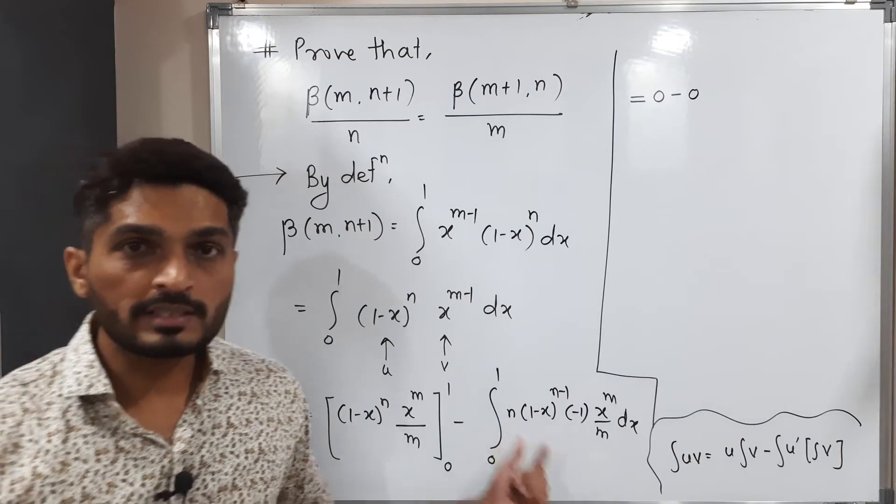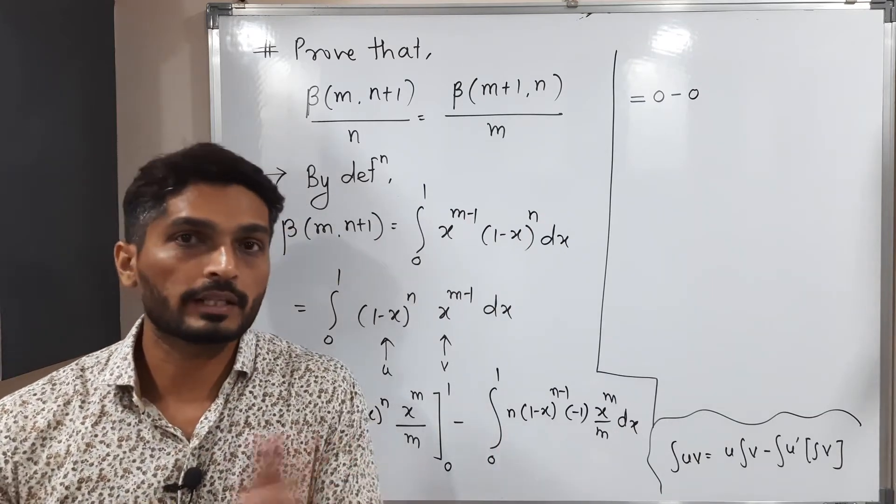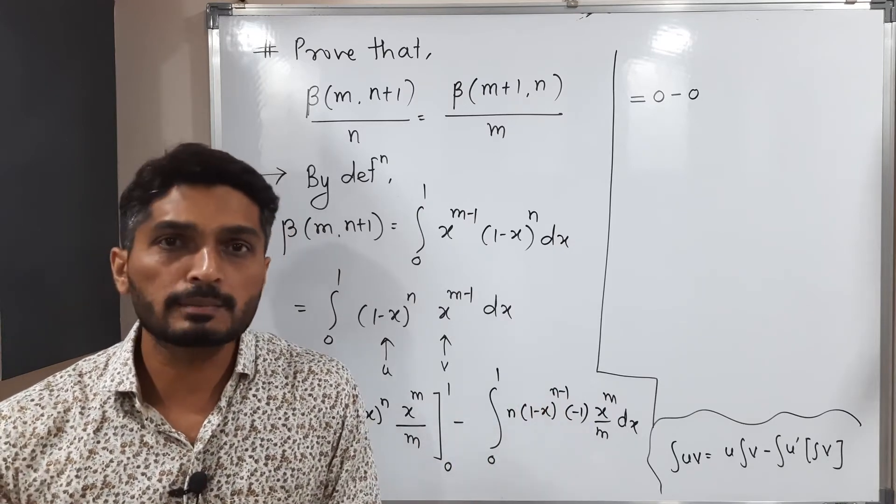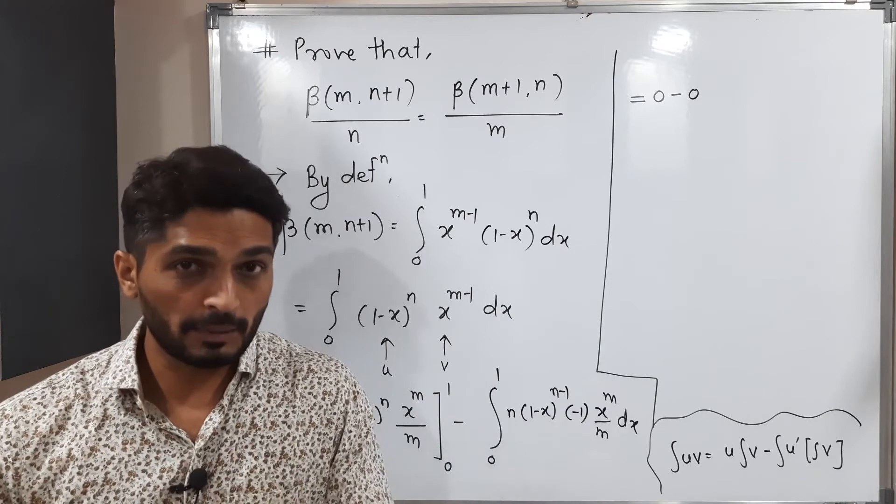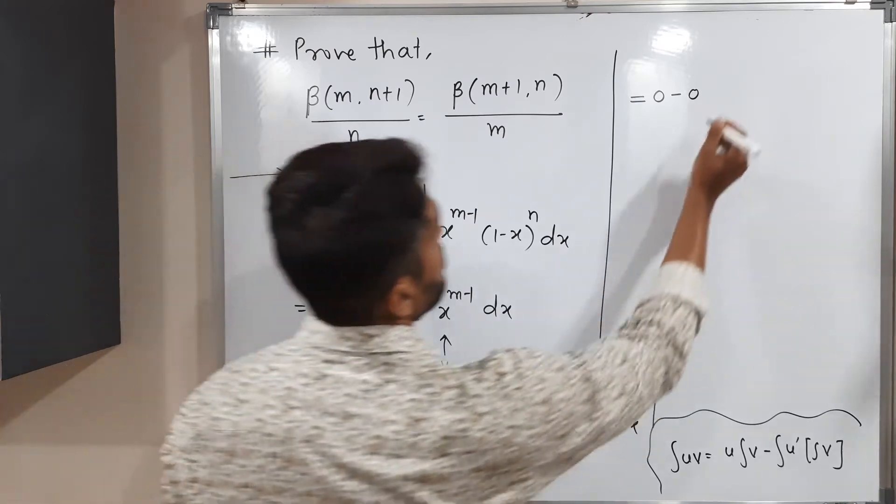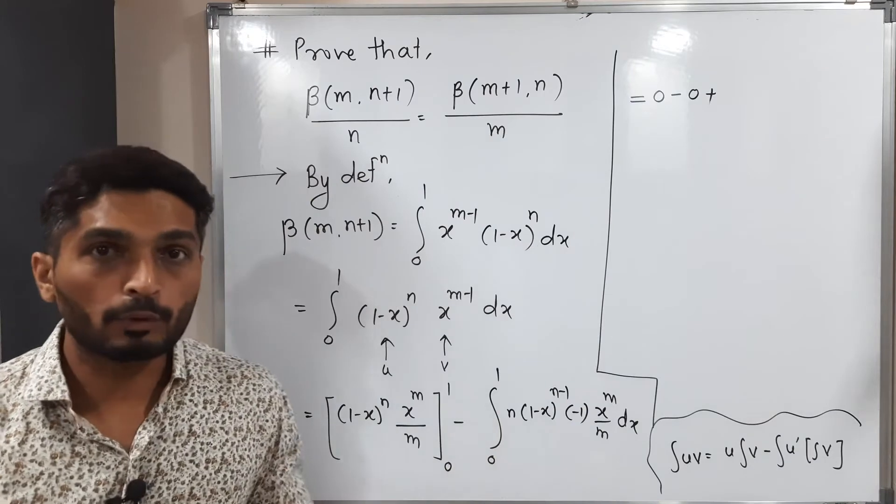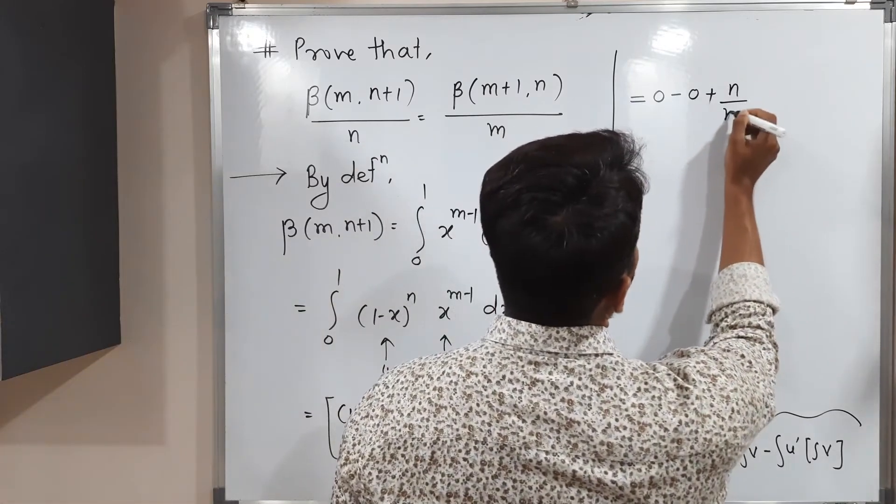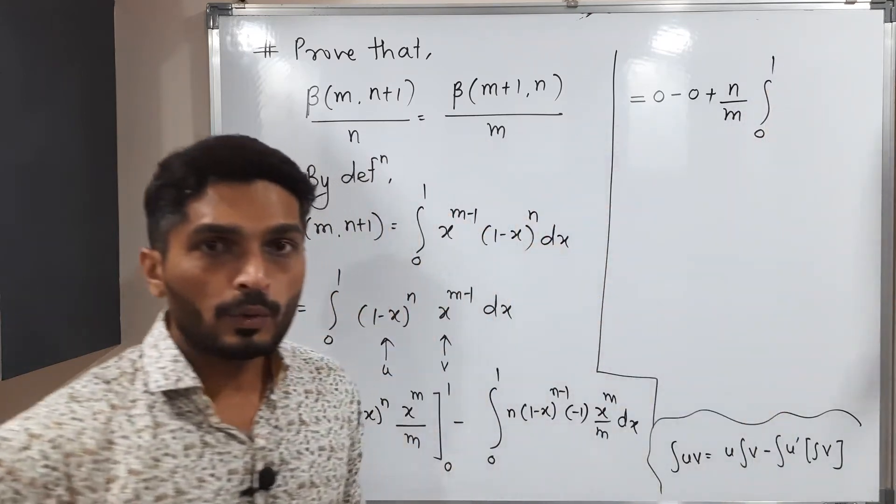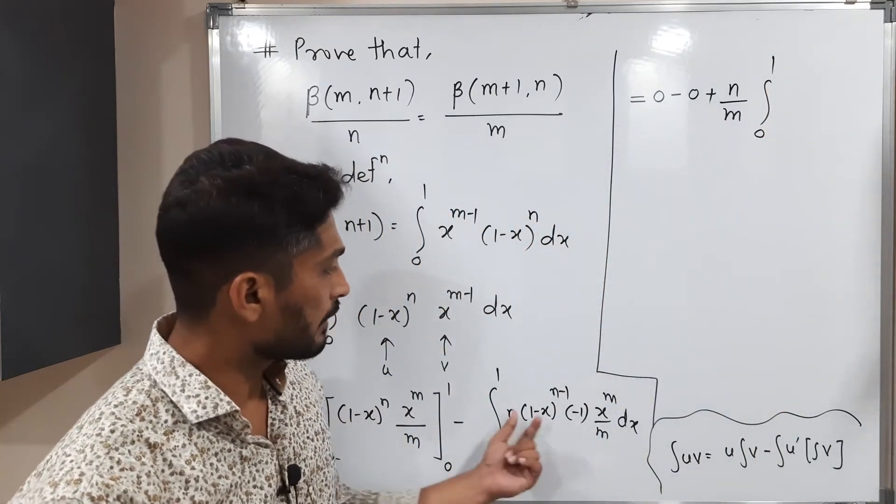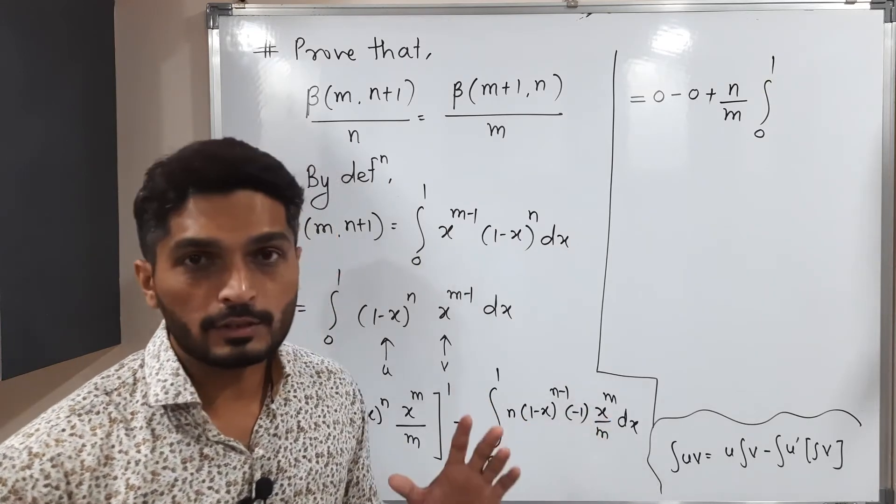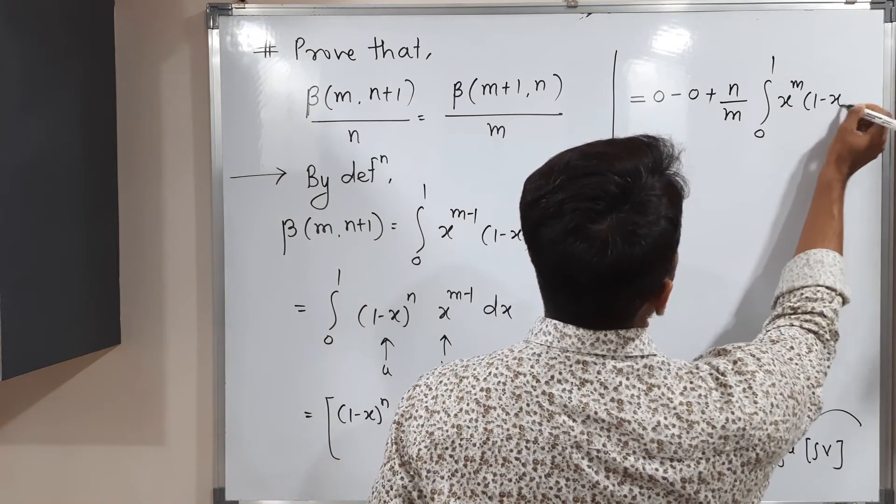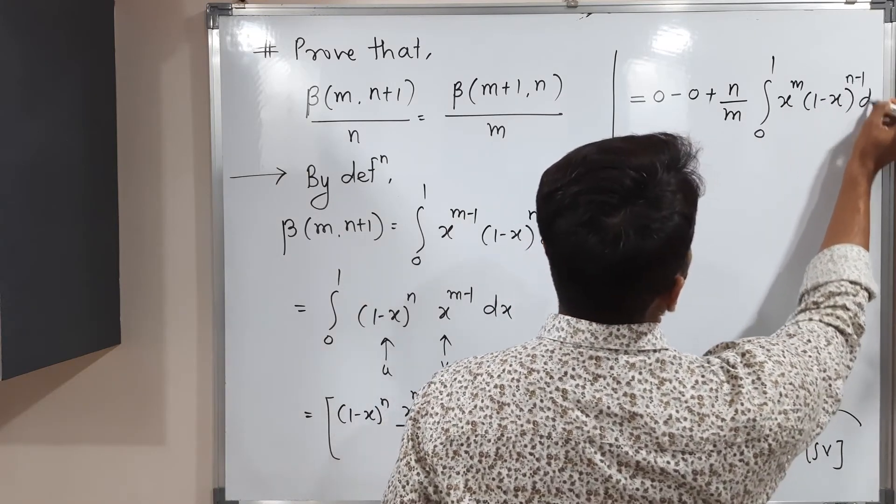When we talk about this integral, whatever constants we have, we always try to take them outside. We have a minus sign constant. Minus 1 will come outside. But already there is a minus sign outside the integration. Minus minus is plus. So that's why I'm writing plus n m. Both of them are constants. Let us take them outside. So here we have n upon m, integration 0 to 1. What we have inside the integration, we have this 1 minus x raised to and this x raised to m. So let us write those things: x raised to m, 1 minus x raised to n minus 1 dx.